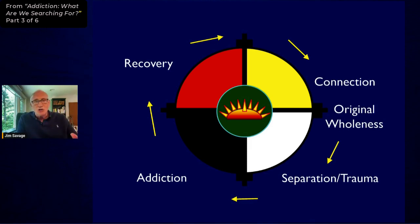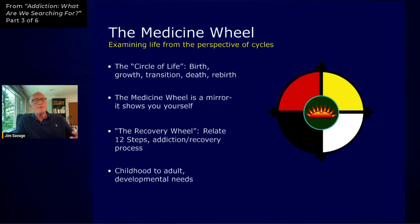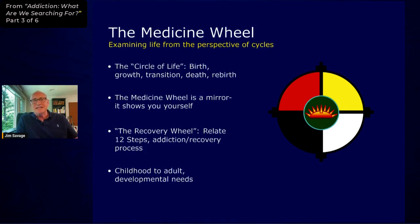That could be an entire talk in itself — that'll be another Wednesday Woo talk going into detail on the medicine wheel. But I want you to be at least familiar with this concept because it's going to fit into what I'm going to be showing you later. The medicine wheel is the circle of life. It shows that there are four stages of a cycle: a birth, a period of growth, a transition, and then a death. The nature of a cycle is that the last stage leads back into the beginning of the new cycle.